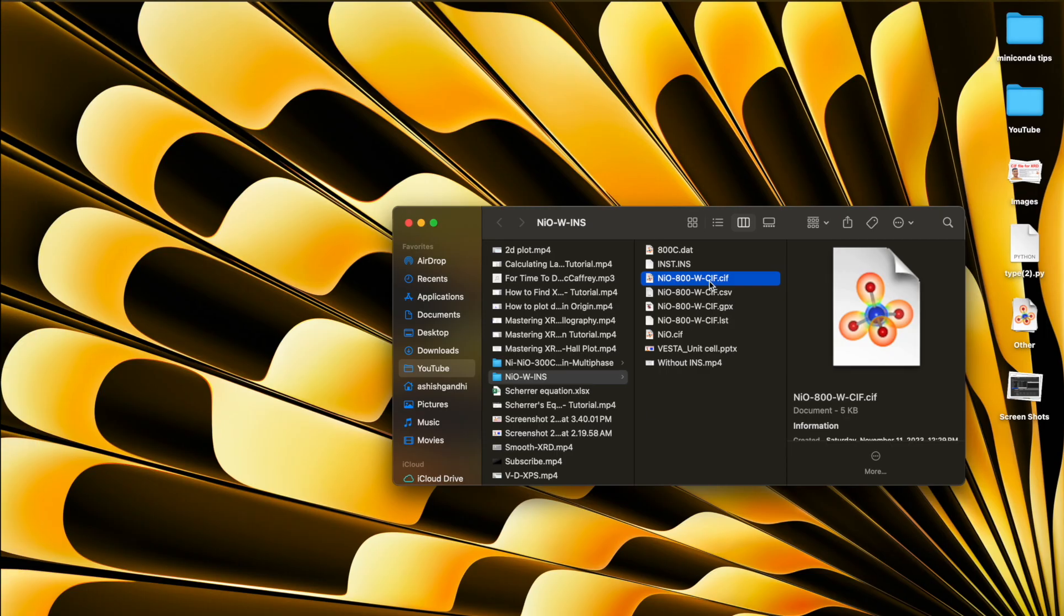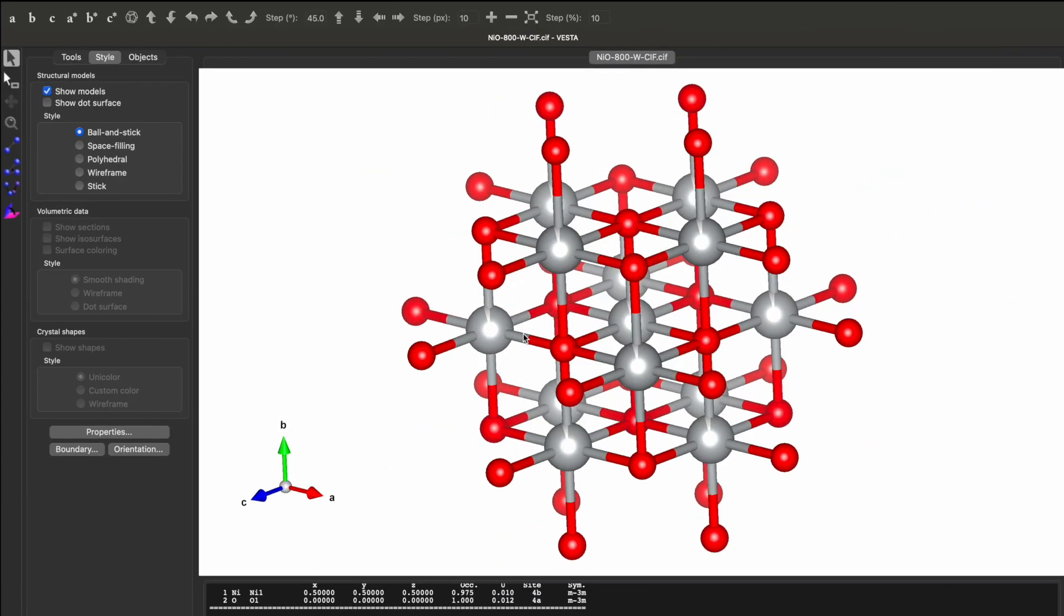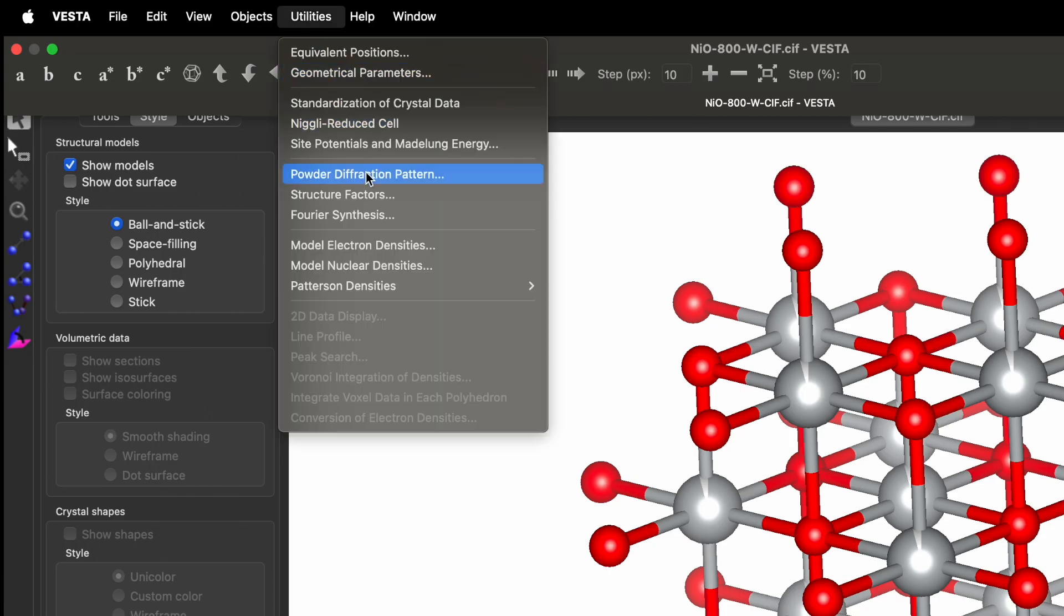Drag your CIF file to the Vista software. This is a nickel oxide unit cell. If you don't know how to get the CIF file, please check out another video—the link is given in the description. You can download it free of cost from the COD website.